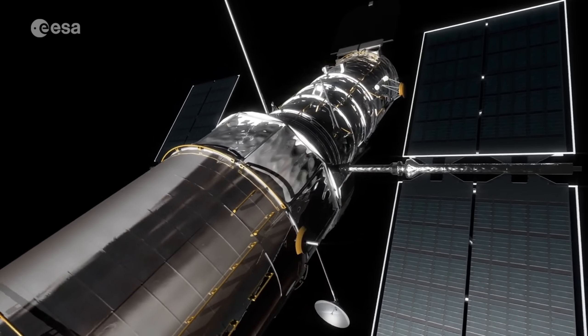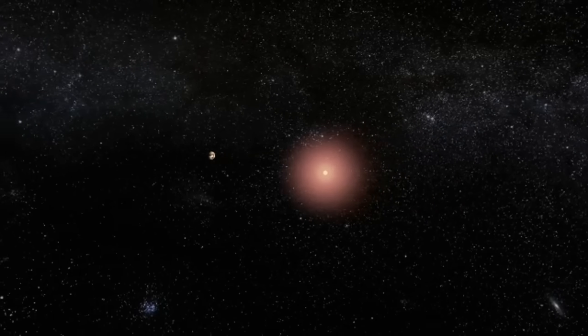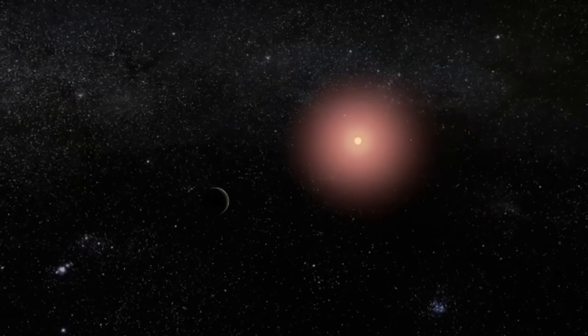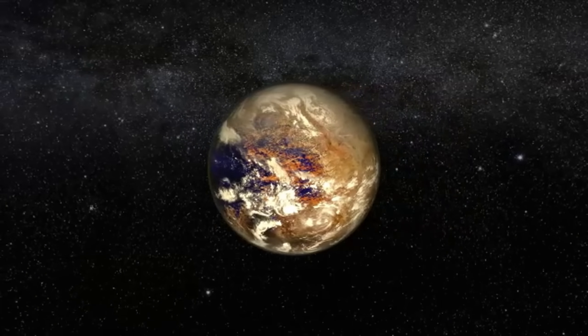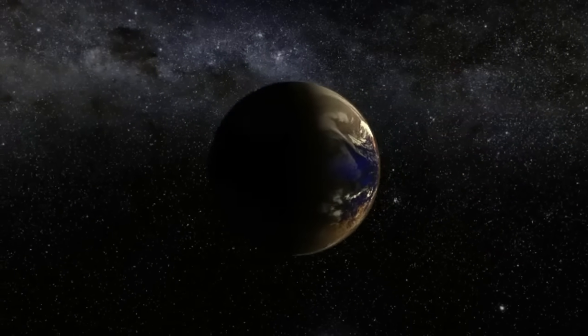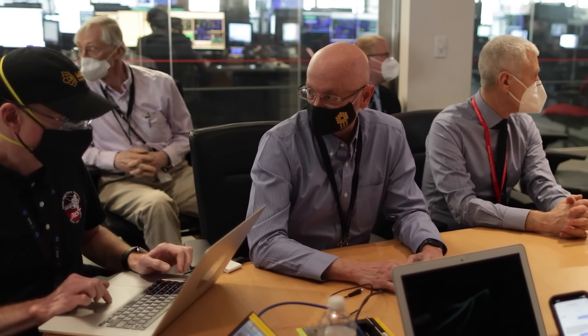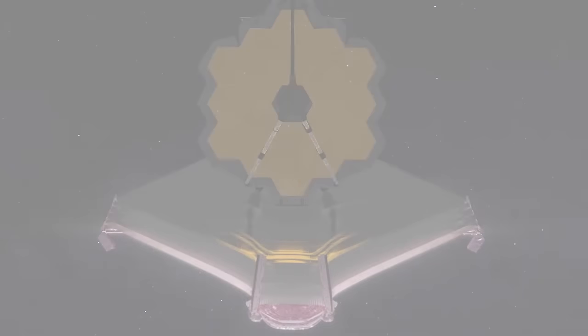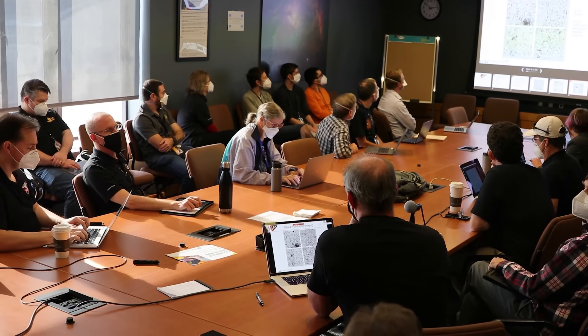The newly unveiled image of Proxima b holds immense scientific significance. Astronomers can now analyze the planet's atmospheric composition, identify potential biomarkers, and study its climate patterns. The data gathered from this observation will contribute to our understanding of exoplanetary atmospheres and enhance our ability to assess the potential habitability of distant worlds.